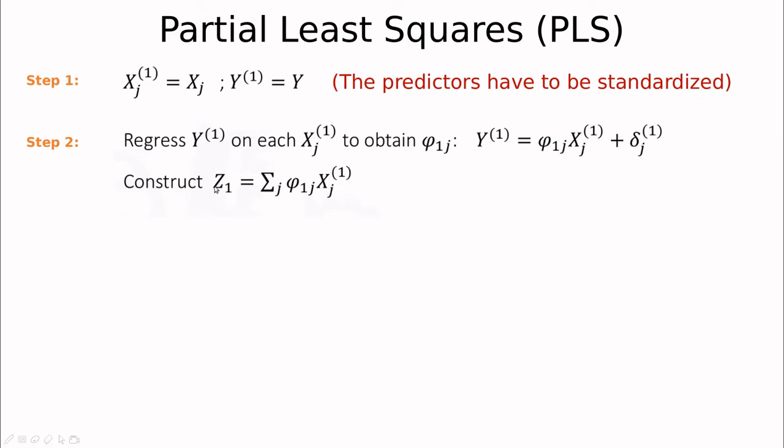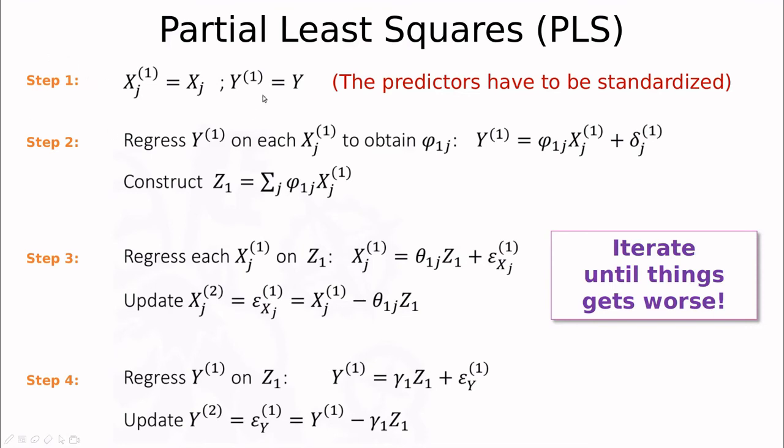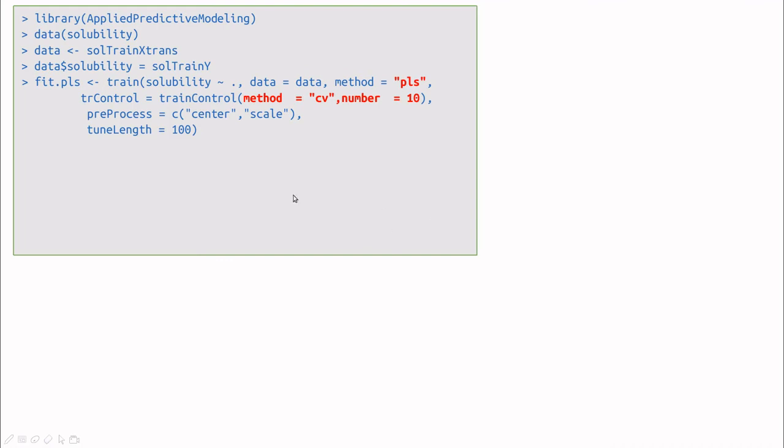In step three we're doing a new regression, and this is really interesting because we're doing regression between the old predictors and the new output. This output is a kind of combination of the original ones. We're going to update the new xj as the residual of the new prediction. In step four we're doing the same: creating a new regression between the original output and this new candidate for output, and then the new output is the residual. With this idea we're trying to minimize this part. When we iterate, we're reducing over and over again these residuals, the deltas and epsilons. After a few iterations we have a good reconstruction of the original model.